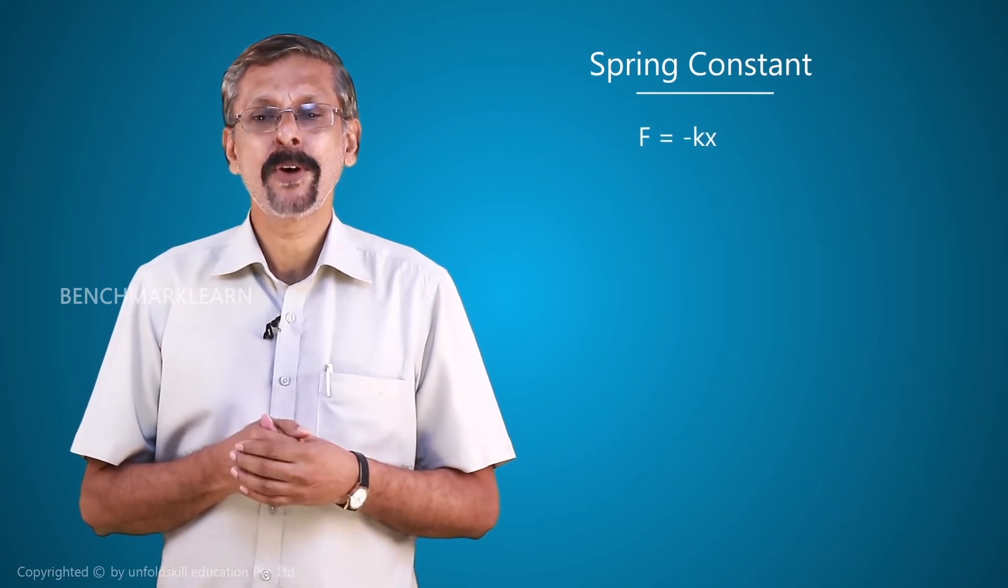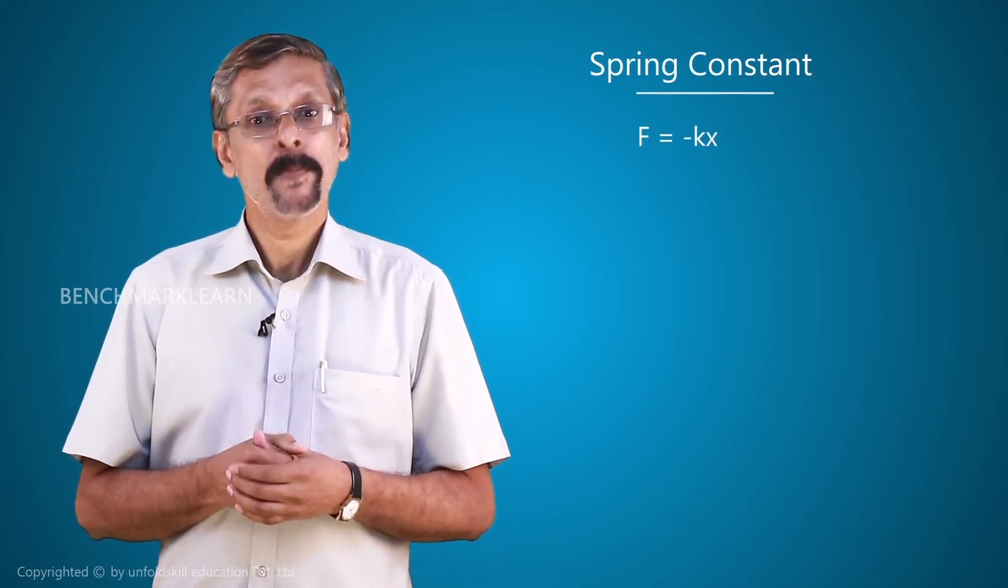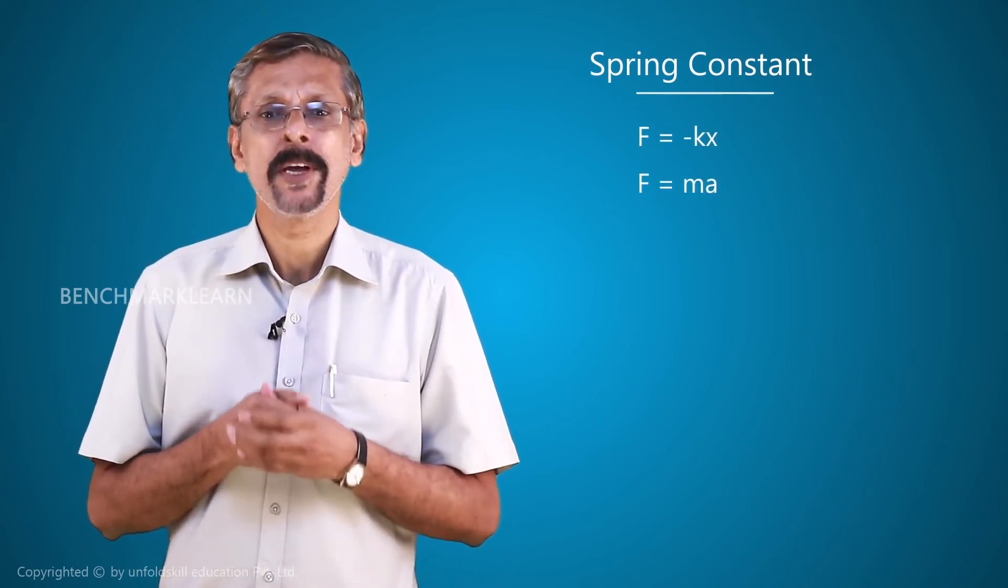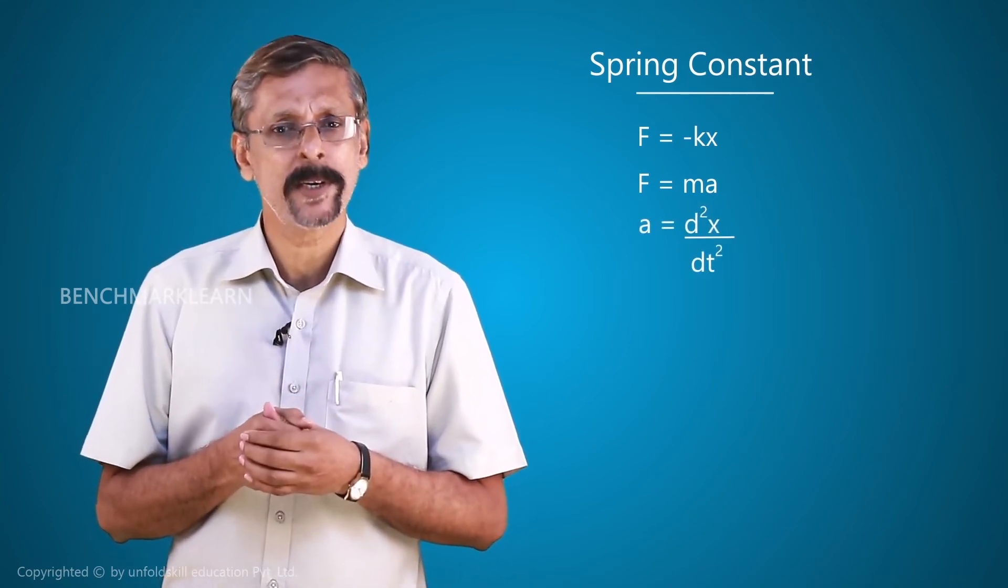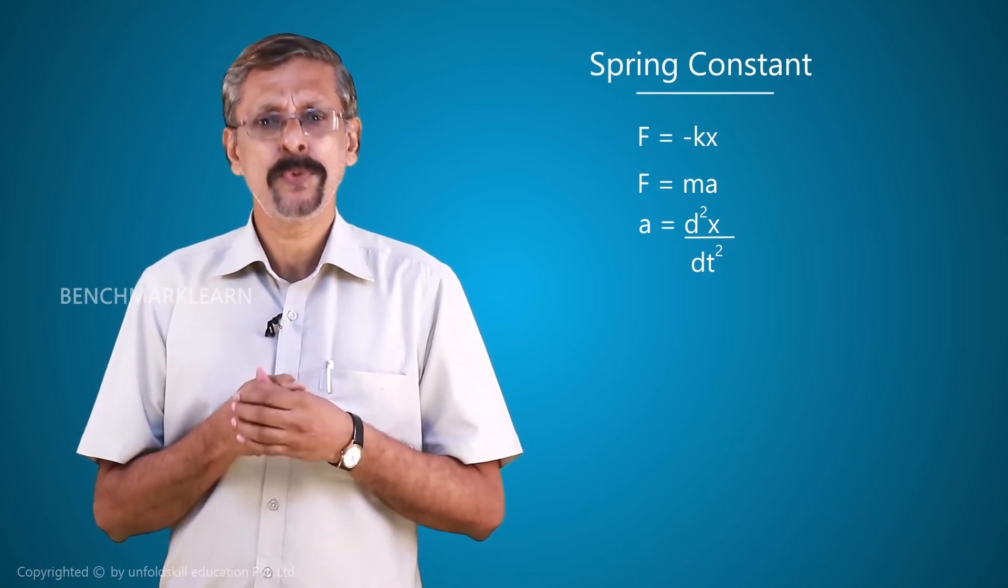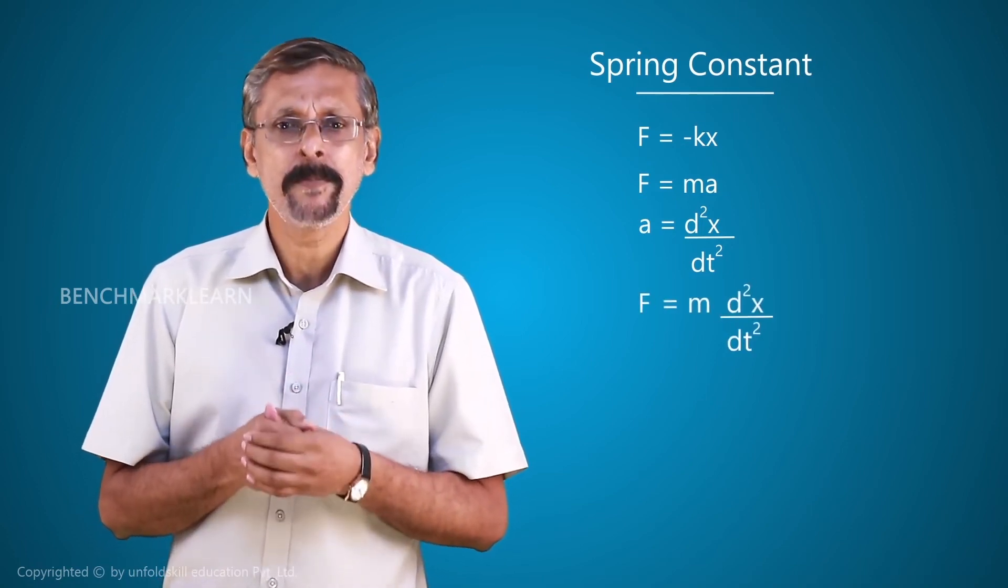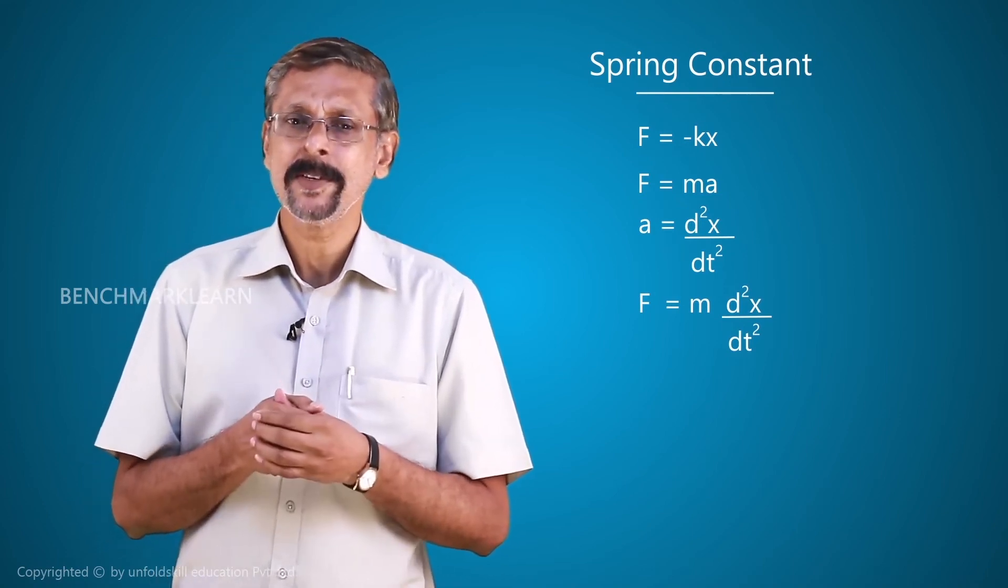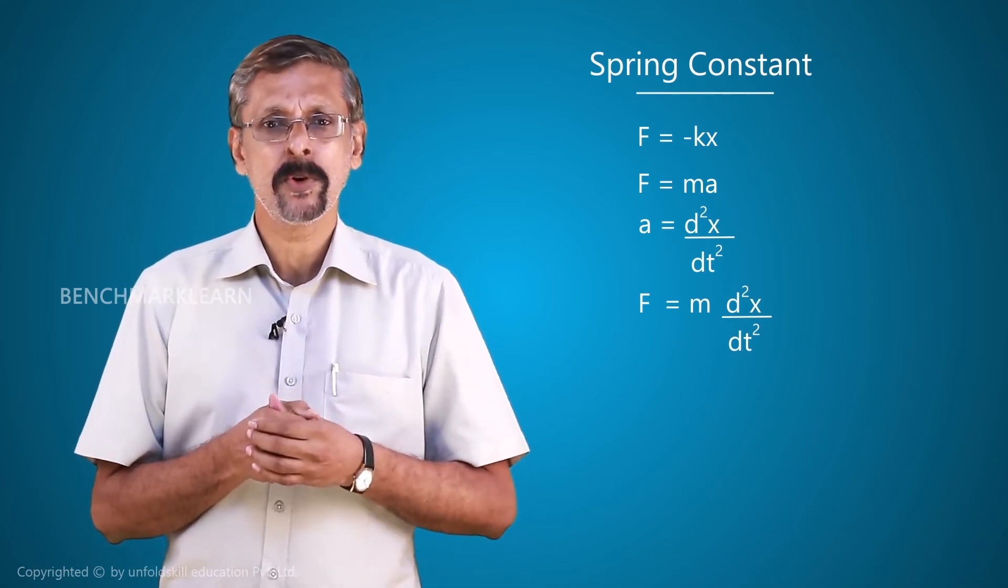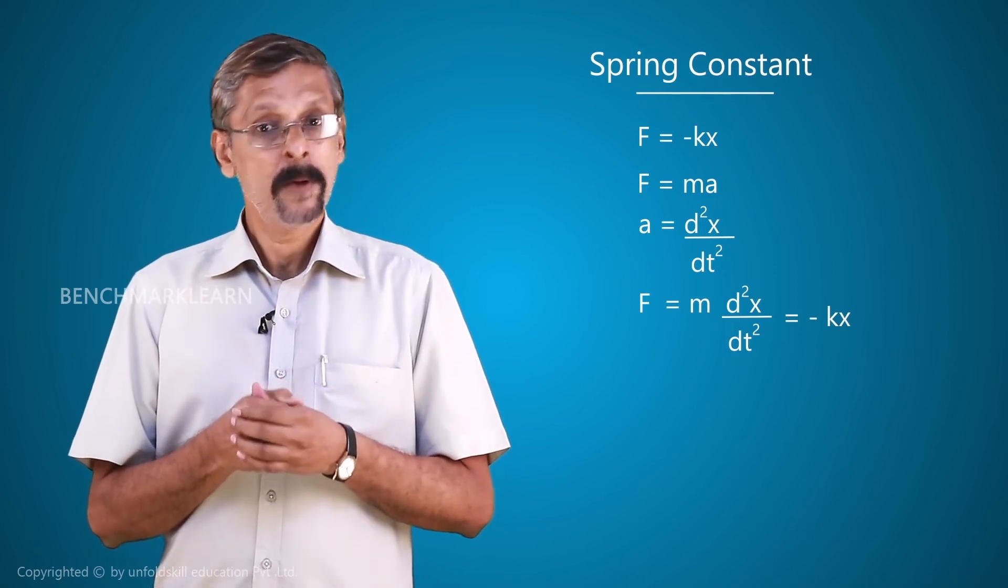Now we have an equation for the spring system, F equal to minus kx. But we know F is equal to ma and a is the acceleration which can be represented as d²x/dt². So at the place of F, we will substitute m into d²x/dt². That is, we have a new equation, m(d²x/dt²) equal to minus kx.